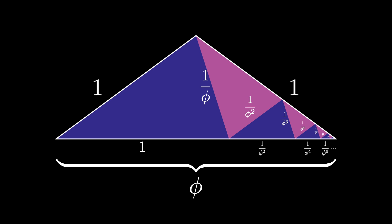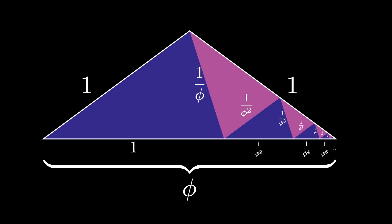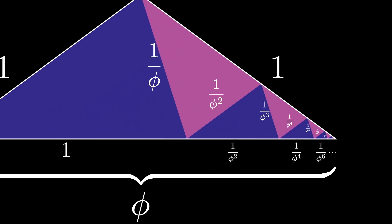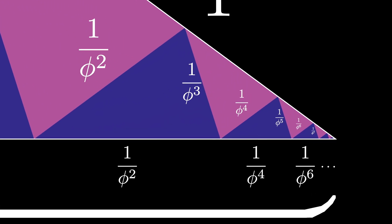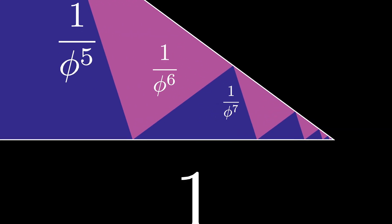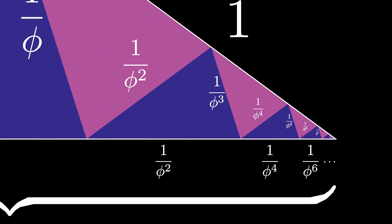If we imagine that we let this process go on forever, or infinitely often, the limiting shape is the entire golden gnomon, and that means that we've filled in the entire golden gnomon with these scaled golden triangles.